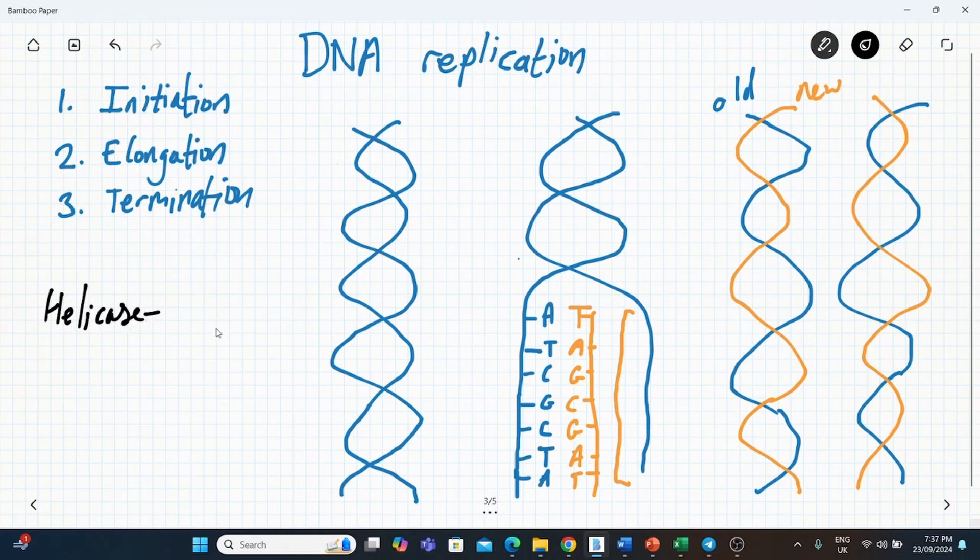So the first enzyme is going to be helicase. Now helicase opens up the helix. DNA being a double helix shape. Then what you want is you need to start adding these bases and you need a primer to start with. And a primase adds a primer.